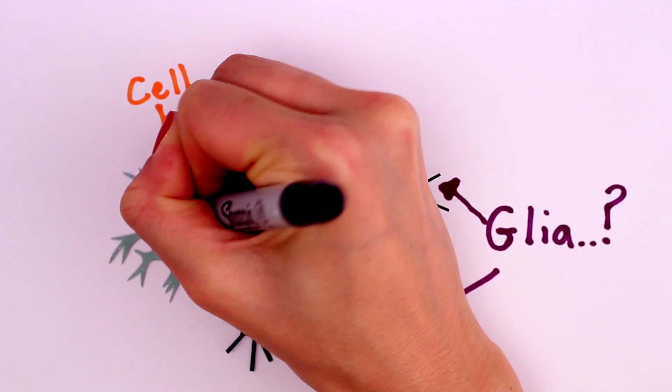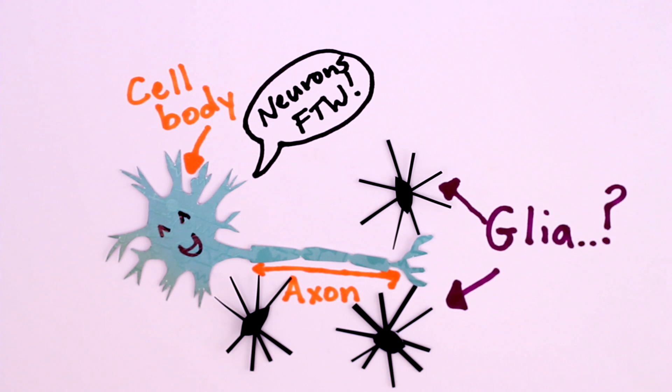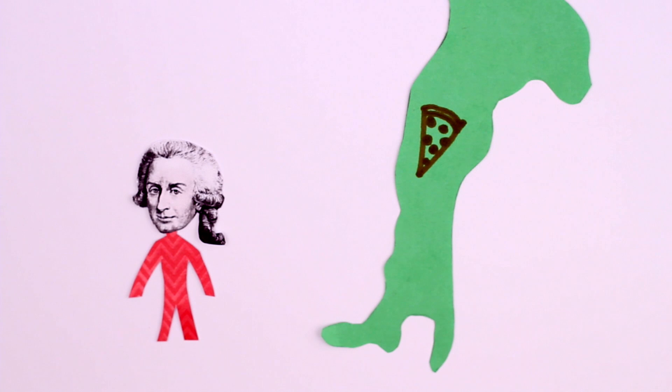Neurons, in contrast, were quickly developing a reputation as the fundamental unit of the nervous system. 100 years before, fellow pizza lover Luigi Galvani had demonstrated the link between electrical currents and muscle contraction.